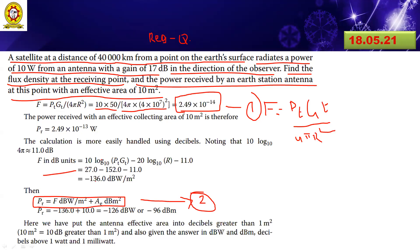That's why we have to express flux density in dBW per square meter format. To solve this, take the fundamental step. F in dB equals 10 log(PT GT) minus 20 log(R) minus 10 log(4π). By substituting the values, you get minus 136.0 dBW per square meter. So F equals minus 136 dBW per square meter.